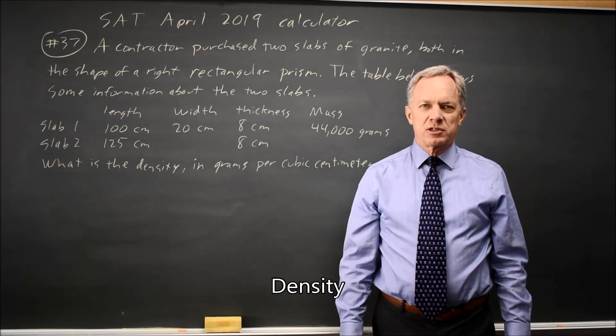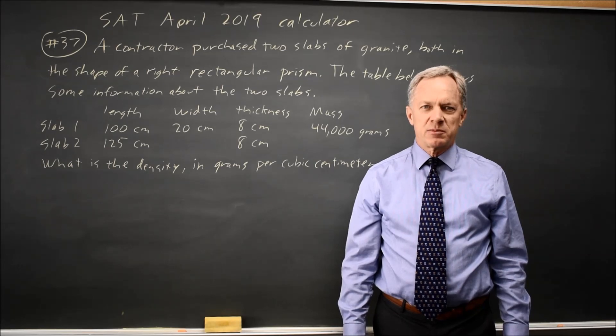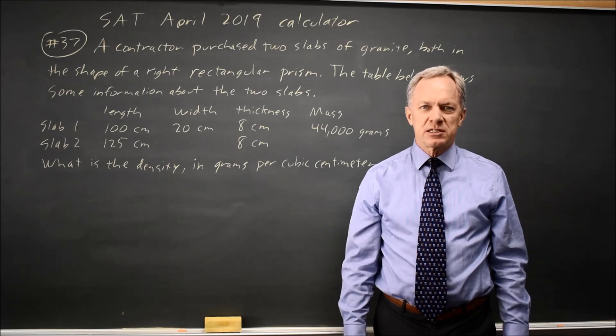This is calculator question number 37 from the April 2019 SAT. College Board gives us some information about two slabs of granite, and they ask for the density in grams per cubic centimeter of slab one.